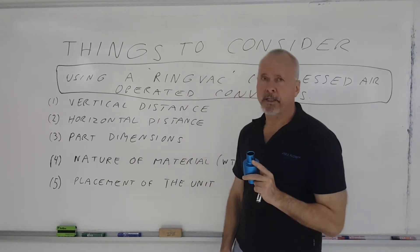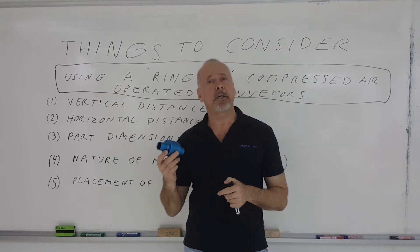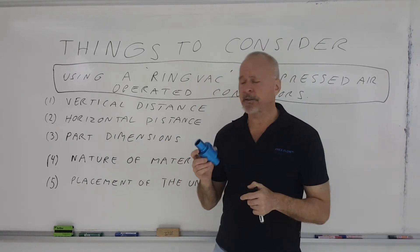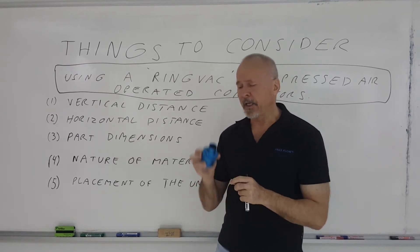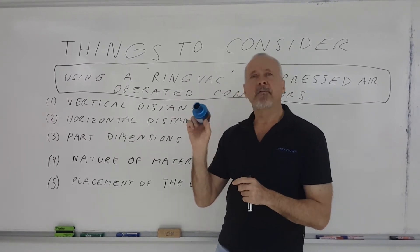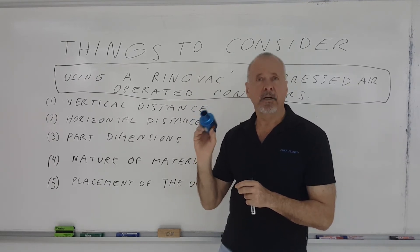Third, the part dimensions. You don't want the material to get stuck inside the unit. The general rule is this: you take the maximum dimension of the part you're conveying, and the inside diameter of the RingVac air-operated conveyor should be double that dimension. Then it won't get stuck.